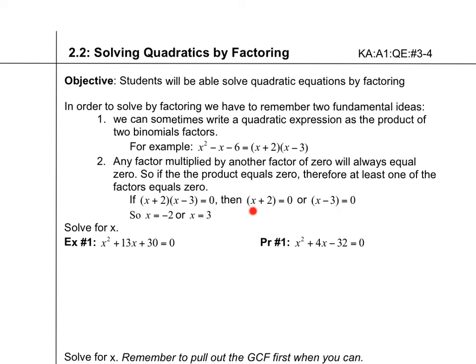Here, what would make this whole thing equal 0? It would be the opposite of 2, right? It would be negative 2. And what would make this equal 0? Well, it would be the opposite of negative 3. So it would be x equals 3. So we're going to remember how to factor and then we're going to use the 0 product property to solve.